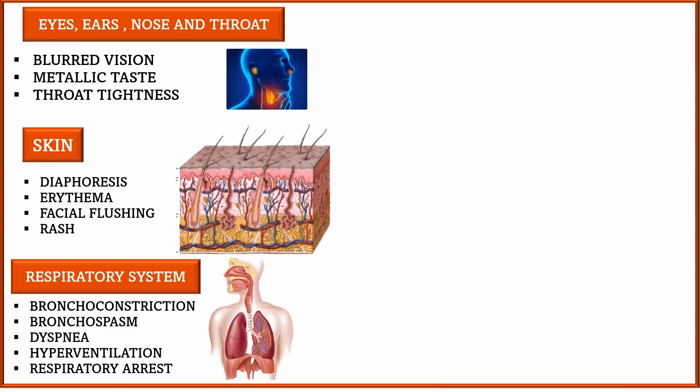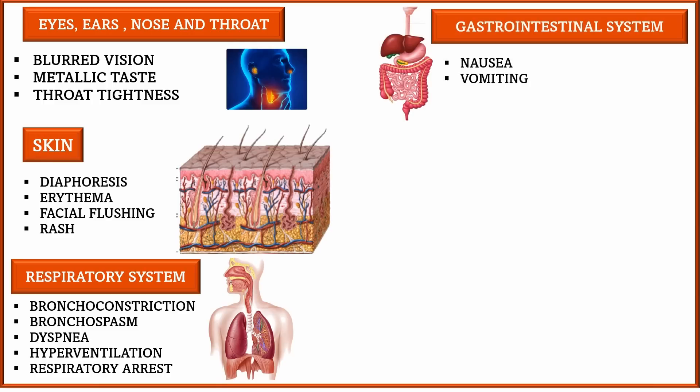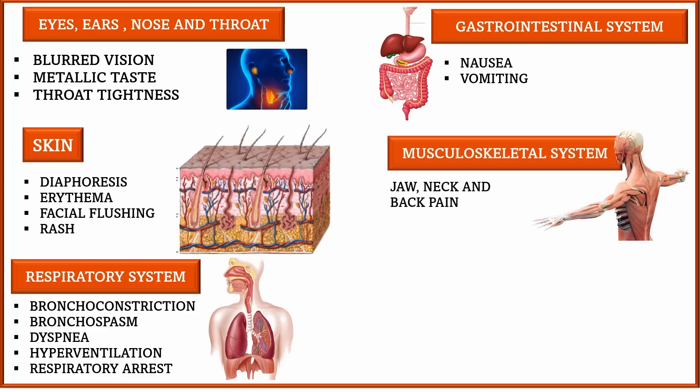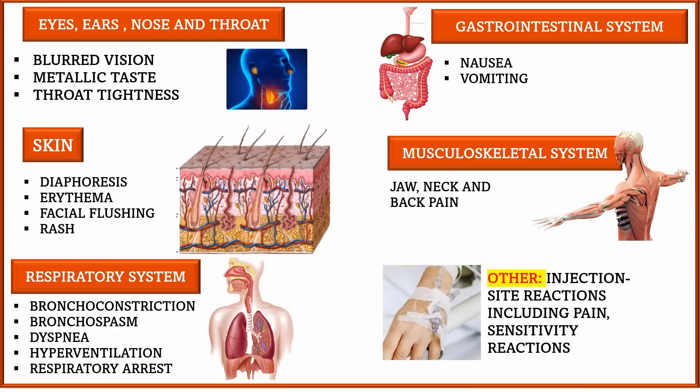Coming to the respiratory system, one may experience bronchoconstriction, bronchospasm, dyspnea, hyperventilation, and respiratory arrest. In the gastrointestinal system, nausea and vomiting are commonly seen. In the musculoskeletal system, jaw, neck, and back pain are common. Additionally, injection site reactions including pain and sensitivity reactions are commonly seen.